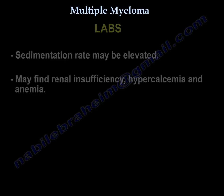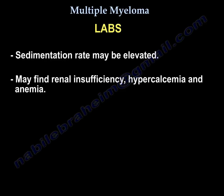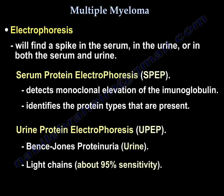Lab findings include elevated erythrocyte sedimentation rate, renal insufficiency, hypercalcemia, and anemia. On electrophoresis, you find an M-spike in the serum, or in the urine, or in both.